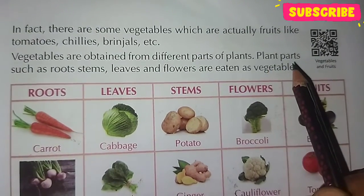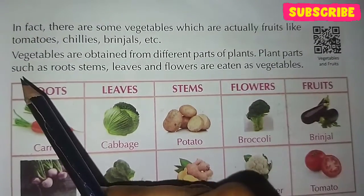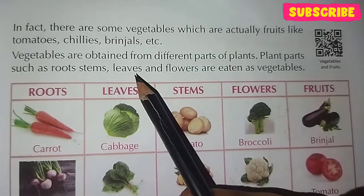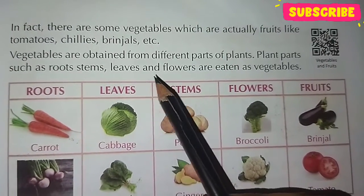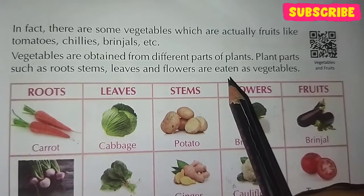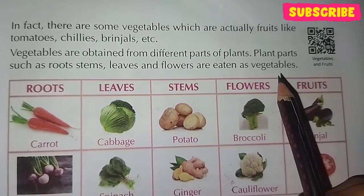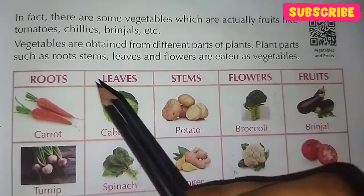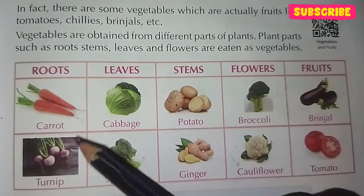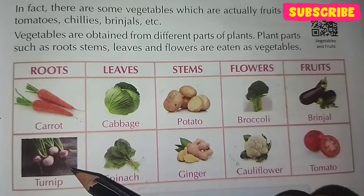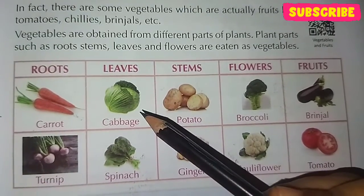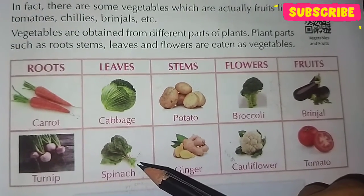Vegetables are obtained from different parts of a plant. Plant parts such as roots, leaves and flowers are eaten as vegetables. Root vegetables include carrots and turnips. Leaf vegetables include cabbage and spinach.